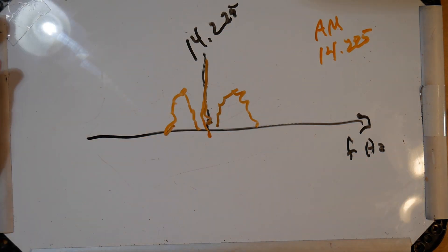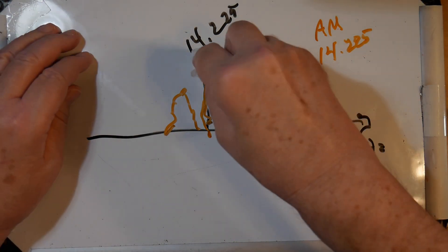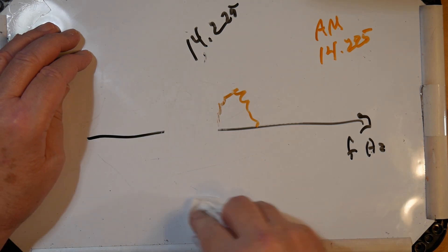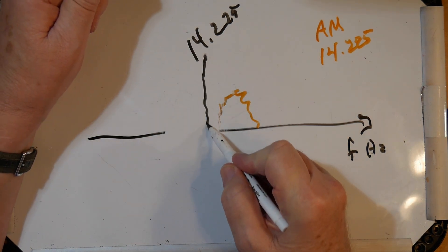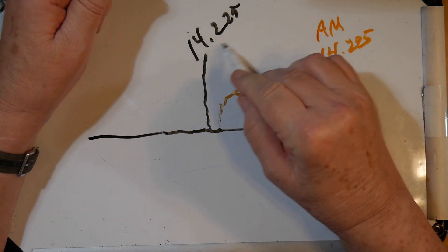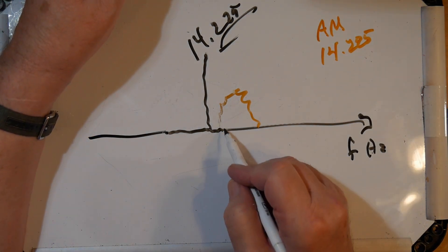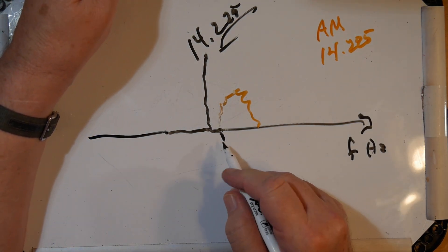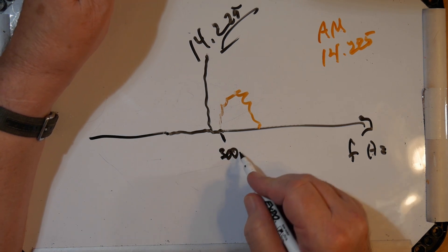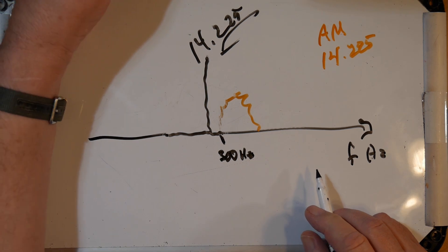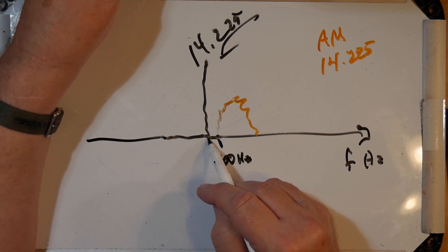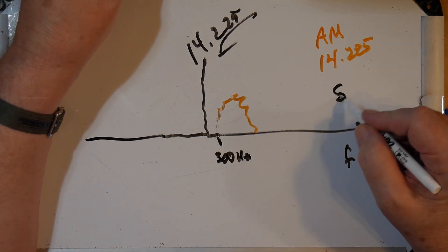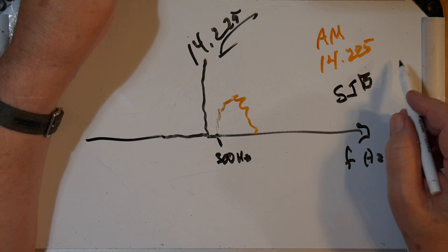When they went to single sideband, they eliminated the carrier and the lower sideband. So the carrier — where the carrier would be but isn't — is at 14.225. However, the lowest that you transmit, the cutoff, is about 300 hertz, a little above middle C on the piano. The carrier is not transmitted — it's suppressed. This is single sideband, suppressed carrier.